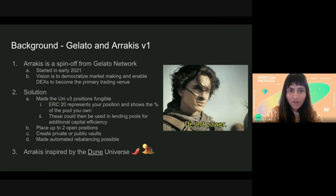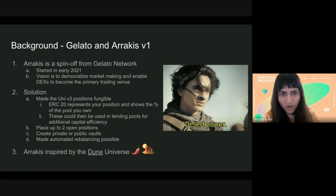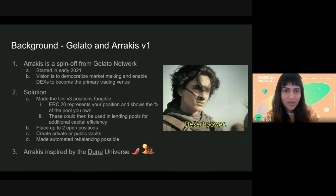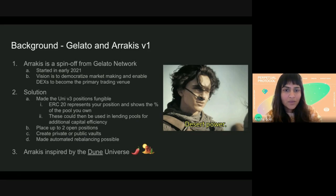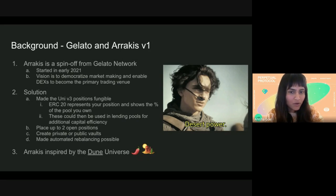Arrakus was essentially a spin-off from Gelato Network and started in early 2021 — so two years old now. They wanted to make LPs more easy and more democratized on UniV3, and basically wanted to make DEXs their primary trading venue. They made the UniV3 positions fungible, which allowed anyone holding the ERC-20 tokens to see the percentage of the pool they own at any time. They could also use these positions on lending pools like Aave and Compound.